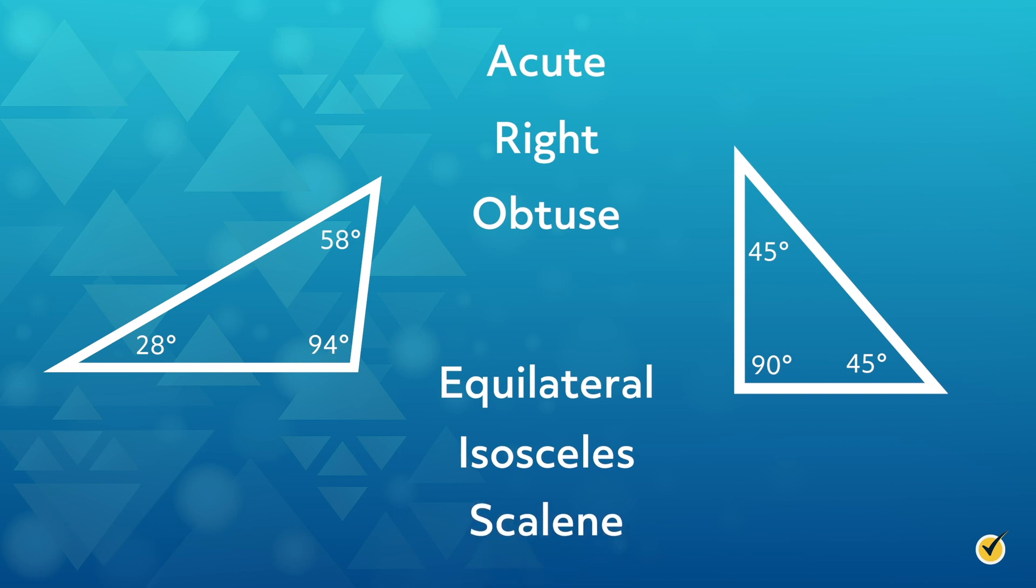Think you got it? The triangle on the left is an obtuse scalene triangle, while the one on the right is a right isosceles triangle.